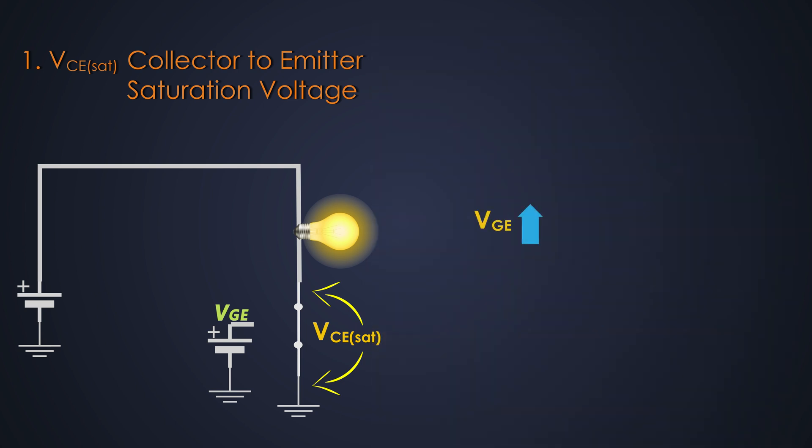If we increase the gate-emitter voltage, the channel conductivity rises, and the VCE-SAT reduces. On the other hand, if the collector current is increased, the VCE-SAT also increases. Now, we can easily calculate the conduction power loss of the IGBT using VCE-SAT and collector current.